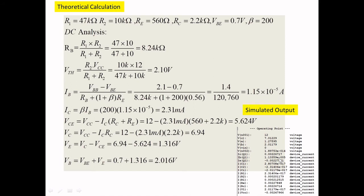The calculated IC is 2.31 milliamps and the simulated value is 2.267 milliamps — almost the same. This close match is because the beta value of 200 was used in both the hand calculation and the custom model. Using a pre-defined reserved transistor model with an unknown beta would cause a mismatch. All other values — VC (6.94 vs 7.01 V) and VE (1.31 vs 1.27 V) — also closely match.